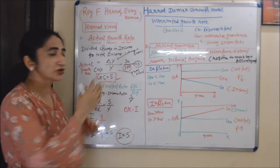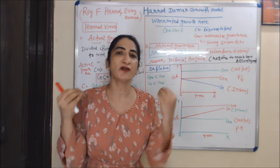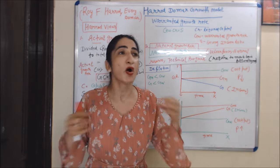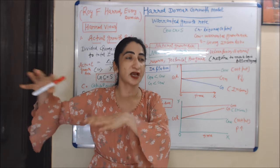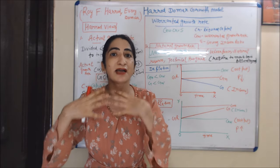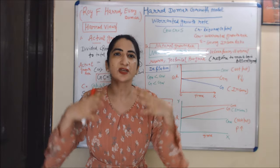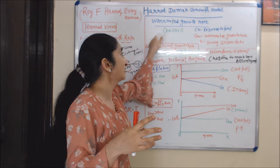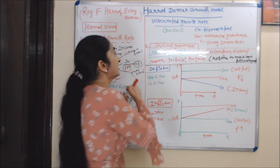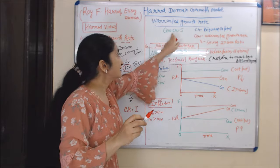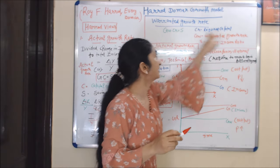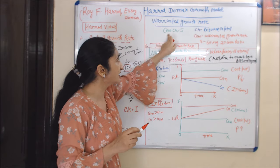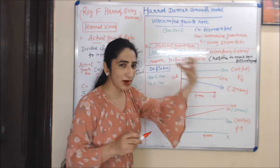Now, warranted growth rate means when the economy is working at its fuller capacity — all resources are fully utilized. As income increases, we invest in capital like tools, machines, and equipment, all working at full capacity. This is the warranted growth rate, represented by the equation GW multiplied by CR equals S, where GW is warranted growth rate, CR is required capital, and S is saving-income ratio.